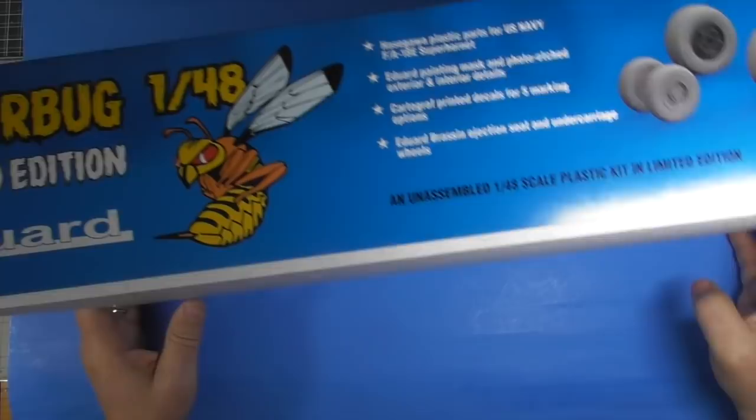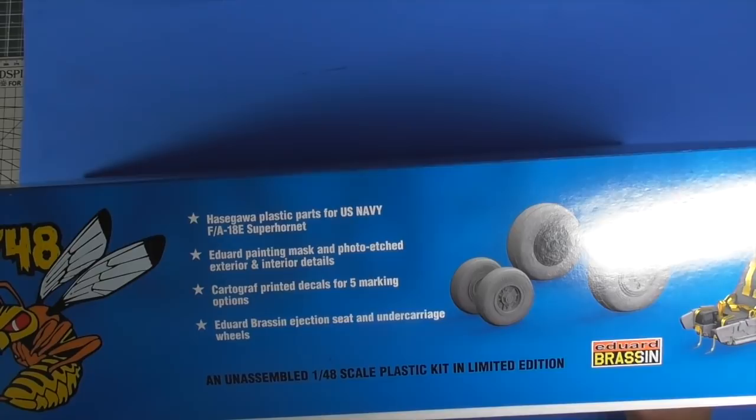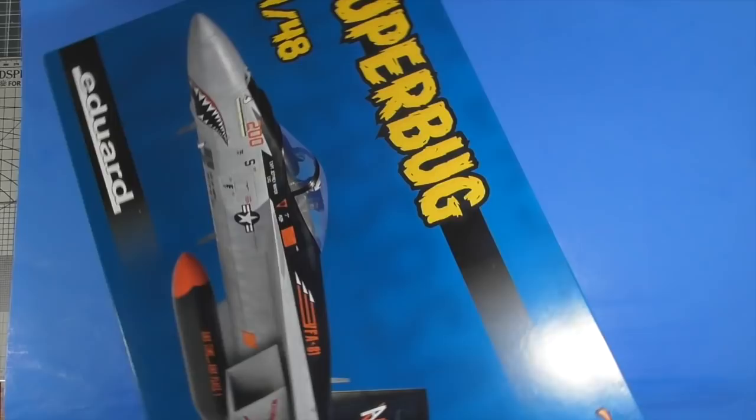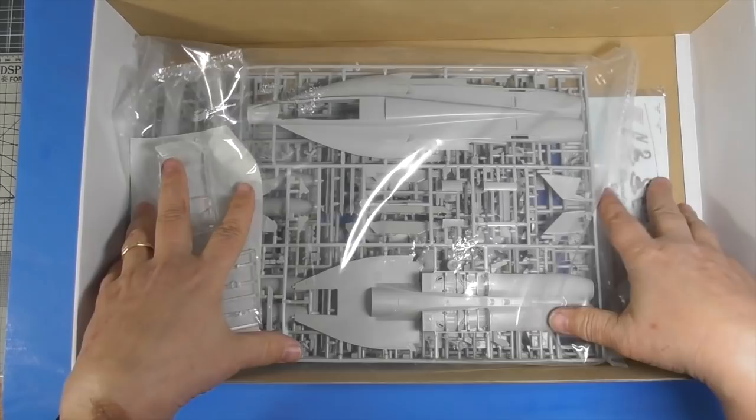On this side it shows us the bee again, and we get Hasegawa parts for the F-18E, Eduard painting mask, photo-etch exterior and interior, Cartograf decals, Brassin ejection seat and wheels. Shall we see what this limited edition has to offer? All right. Some stuff out of the way. Wow, big box.